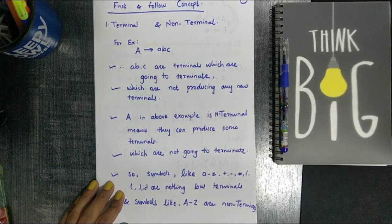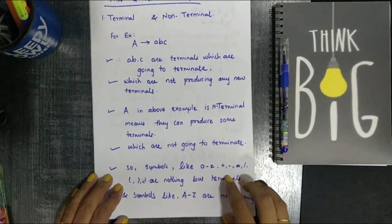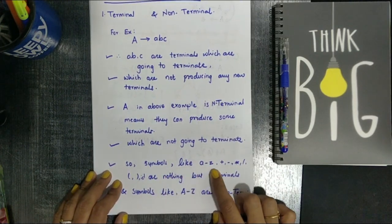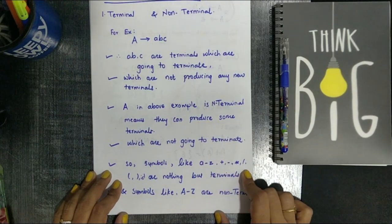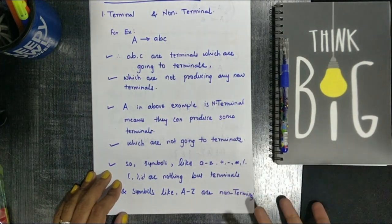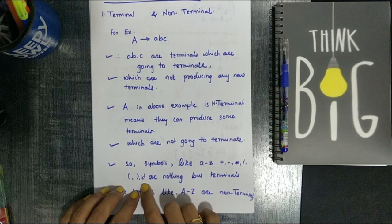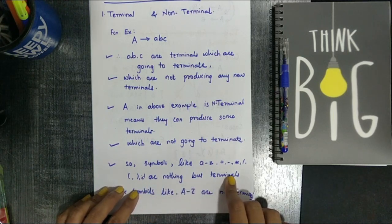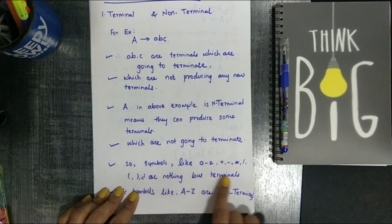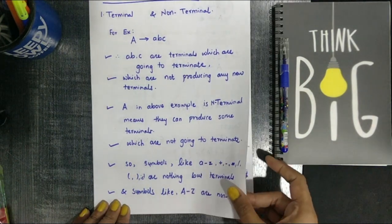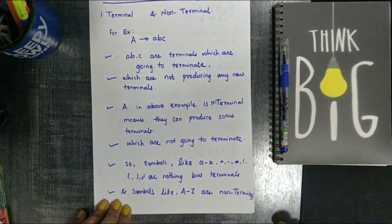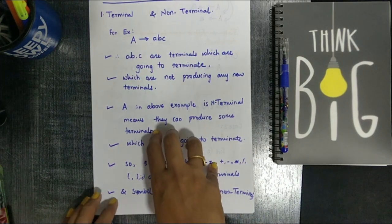Symbols like lowercase a to z, or symbols like plus, minus, multiplication, division, brackets, or identifier (id) are nothing but the terminals. Symbols like capital A to Z are known as non-terminals. I think all of you now have a better idea about terminals and non-terminals.